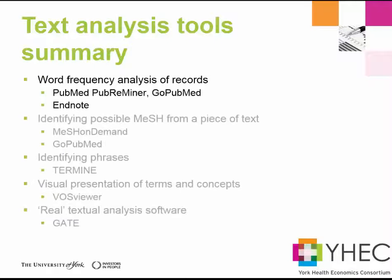So to summarize, I've shown you two interfaces to PubMed: PubMed Pub Reminer and Go PubMed. They both offer the ability to analyze words within PubMed records and provide lists of terms that you might consider to use in your search strategy. This is obviously very useful for PubMed in particular. In healthcare there aren't many similar interfaces for other healthcare databases. However we can use EndNote bibliographic software to carry out simple frequency analysis in much the same way as Pub Reminer and Go PubMed.